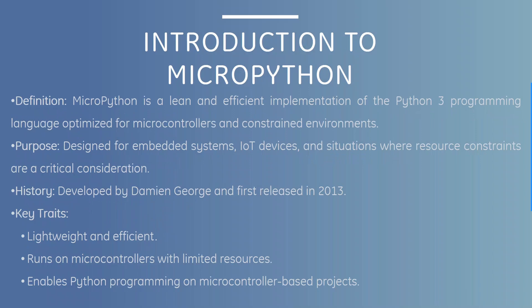Now what is MicroPython? MicroPython is a lean and efficient implementation of the Python 3 programming language optimized for microcontrollers and constrained environments. It was designed for embedded systems, IoT devices, and situations where resource constraints are a critical consideration. It was developed by Damien George and first released in 2013. Key traits include being lightweight and efficient, running on microcontrollers with limited resources, and enabling Python programming on microcontroller-based projects.